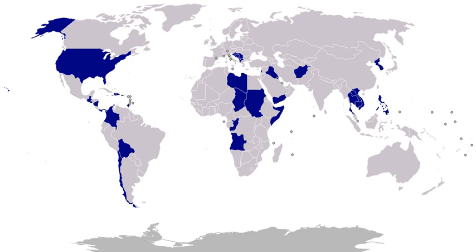1932, China: American forces were landed to protect American interests during the Japanese occupation of Shanghai. 1932, United States: bonus army of 17,000 World War I veterans plus 20,000 family members cleared from Washington and then Anacostia Flats, Hooverville, by 3rd Cavalry and 12th Infantry Regiments under General Douglas MacArthur and Major Dwight D. Eisenhower, July 28. 1933, Cuba: during a revolution against President Gerardo Machado, naval forces demonstrated but no landing was made. 1934, China: Marines landed at Foochow to protect the American consulate.